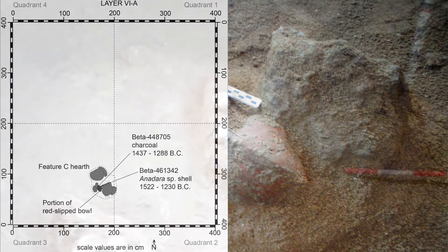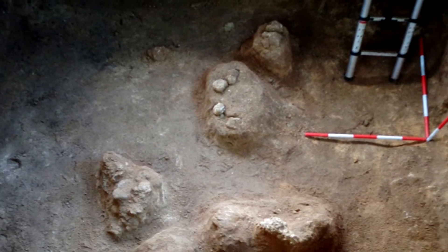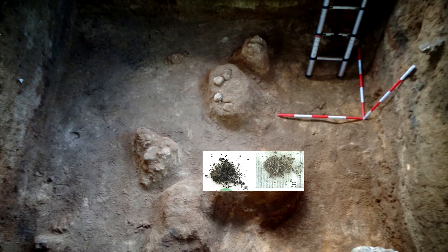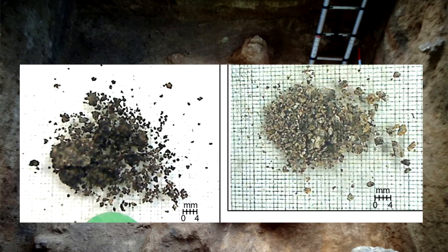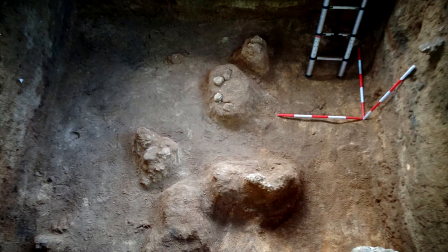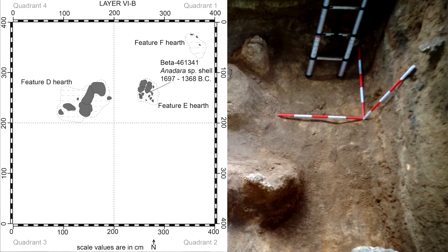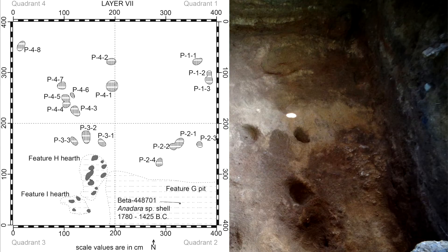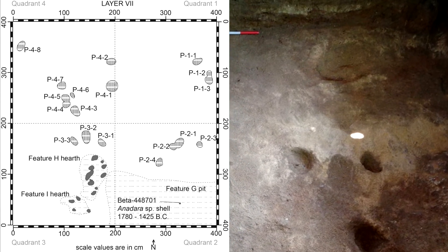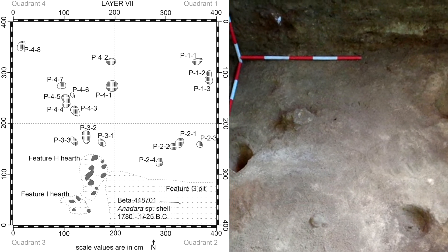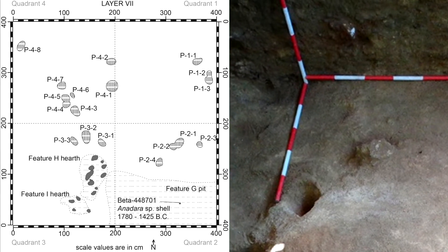A minor marine reservoir correction was calculated specifically for the Anadara shell in this context and it accorded with calculations for other Anadara shells paired with charcoal samples at sites in nearby islands of Tinian and Guam. As the excavation proceeded, another lower layer revealed more hearth features, but here the fragments of charcoal proved to be insufficient for radiocarbon dating. Instead, the Anadara shells offered the best material for dating, using the same calculation as proven for the overlying stratigraphic layer. Indeed, the dating results were slightly older in this lower layer.